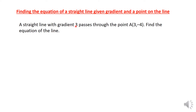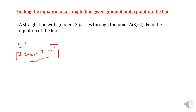We are asked to find the equation of a line with gradient 3 passing through the point (3, -4). The formula used to find the equation of a line is: y minus y₀ is equal to m bracket x minus x₀, where m is the gradient or slope.